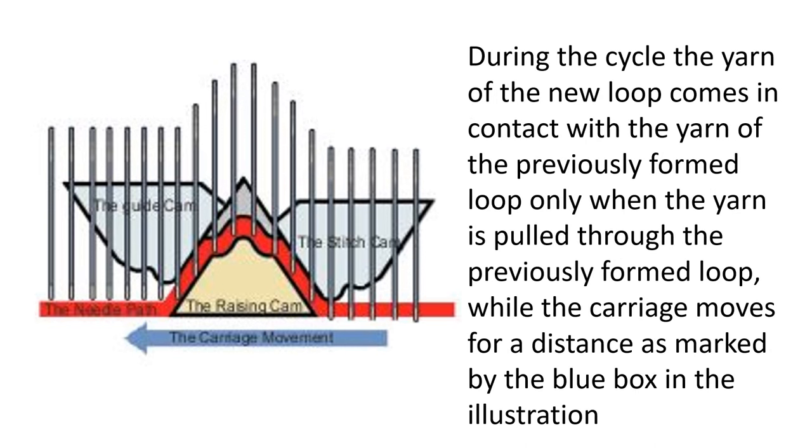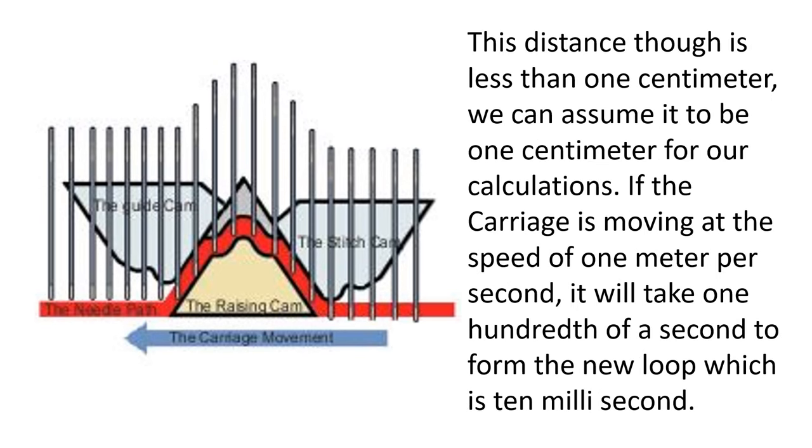During the cycle, the yarn of the new loop comes in contact with the yarn of the previously formed loop only when the yarn is pulled through the previously formed loop, while the carriage moves for a distance as marked by the blue box in the illustration. This distance, though is less than one centimeter, we can assume it to be one centimeter for our calculations. If the carriage is moving at the speed of one meter per second, it will take one hundredth of a second to form the new loop, which is 10 milliseconds.